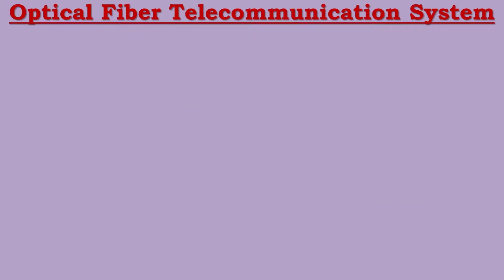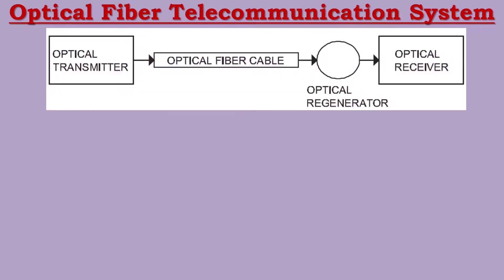The fiber optic telecommunication system can be understood through a simple block diagram. In this block diagram, there are four sections: the first section is the optical transmitter, the second section is the optical fiber cable, the third section is the optical regenerator, and the fourth section is the optical receiver.